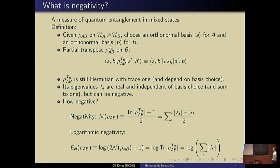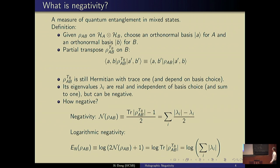One can also define a logarithmic version by taking the trace of the absolute value of the transposed density matrix — that's like taking the sum of the absolute values of the eigenvalues and then taking the log of that. This is called log negativity.